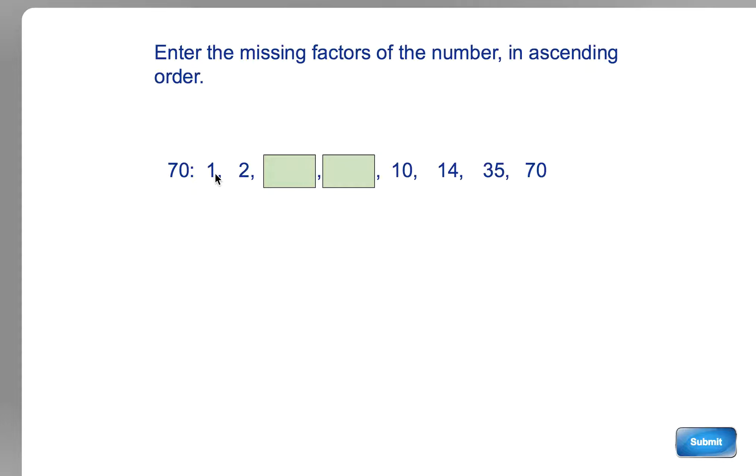So you can multiply these in pairs. 1 multiplied by 70 gets to 70, so 1 and 70 are factors of 70. All even numbers also have 2 multiplied by something. In this case it's 2 multiplied by 35, and you can see that those go together as a pair, and that makes 70 as well.